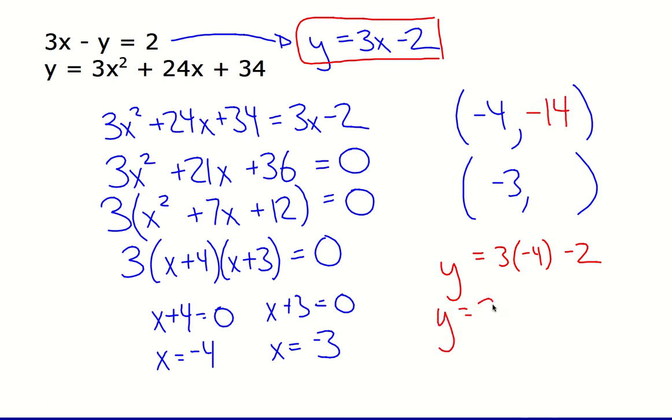If I substitute in negative 3, then I get 3 times negative 3 minus 2, so negative 9 minus 2, which is negative 11. And the ordered pairs are the solutions.